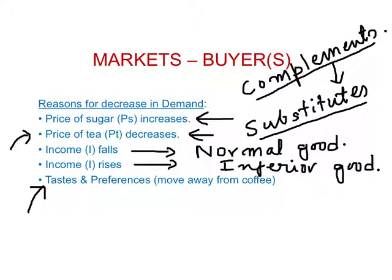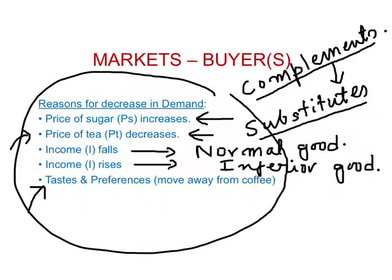Here is a list of different variables which could cause a decrease in demand for coffee, indicated by a leftward shift of the demand curve. For a rightward shift, which represents an increase in demand, it will be exactly the opposite of the variables listed here.